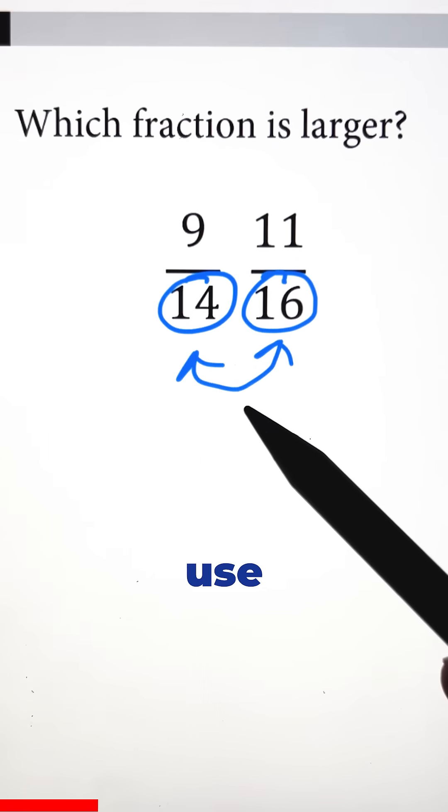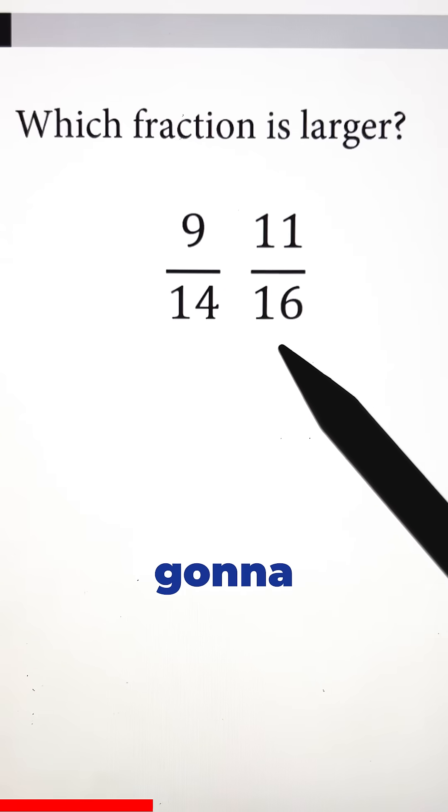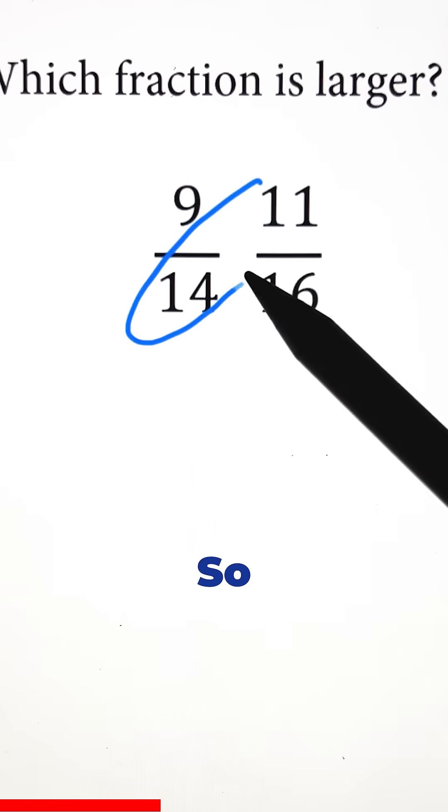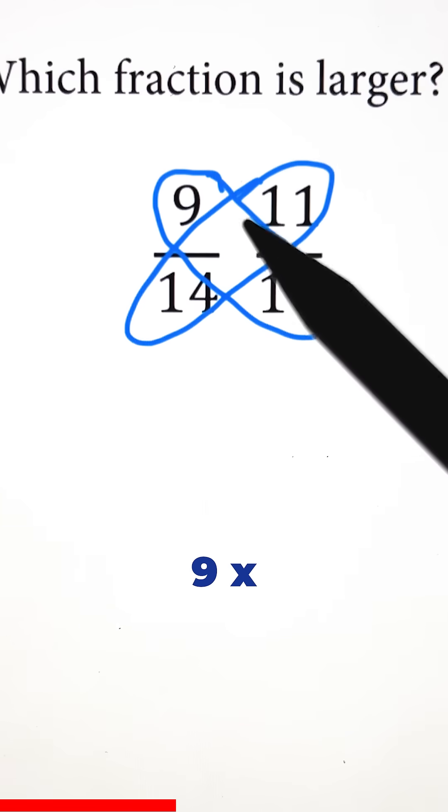We're going to use something called the butterfly method. Essentially what that is, is first we're going to get rid of this right here because we don't need it. The first thing we're going to do is multiply this diagonal, so 14 times 11, and the second one is the second diagonal, which is 9 times 16.